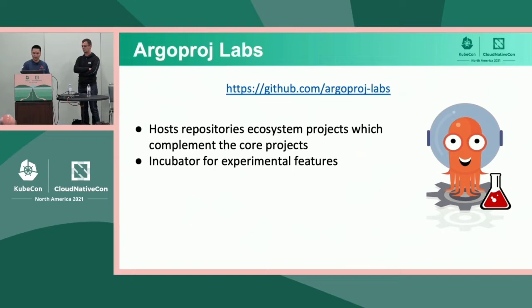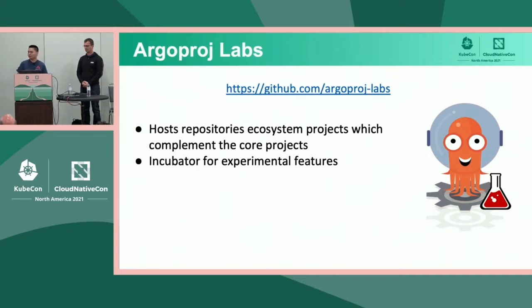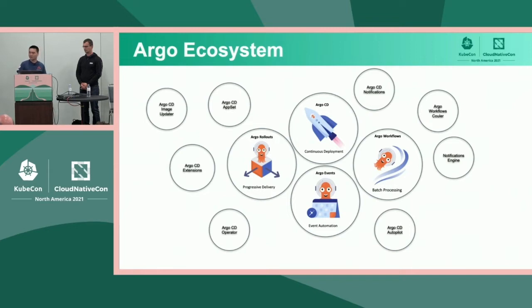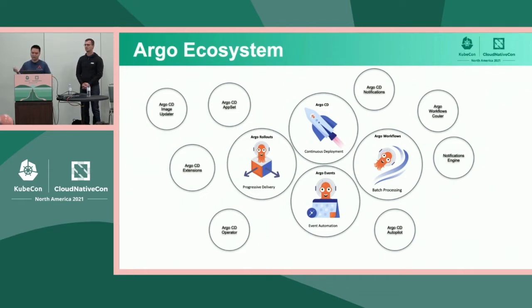We formed a sister organization called ArgoProjLabs. This is a place to host ecosystem projects from the community that complement the core projects — a place where the community can collaborate on new ideas and discover useful add-ons. Labs acts like an incubator for experimental features we want to explore. As of today, we've accumulated over three dozen ecosystem projects. Some didn't pan out, but others are quite popular, and we're now considering including some popular ones as part of the core projects. Today we'll go over a handful that enhance the Argo CD experience.